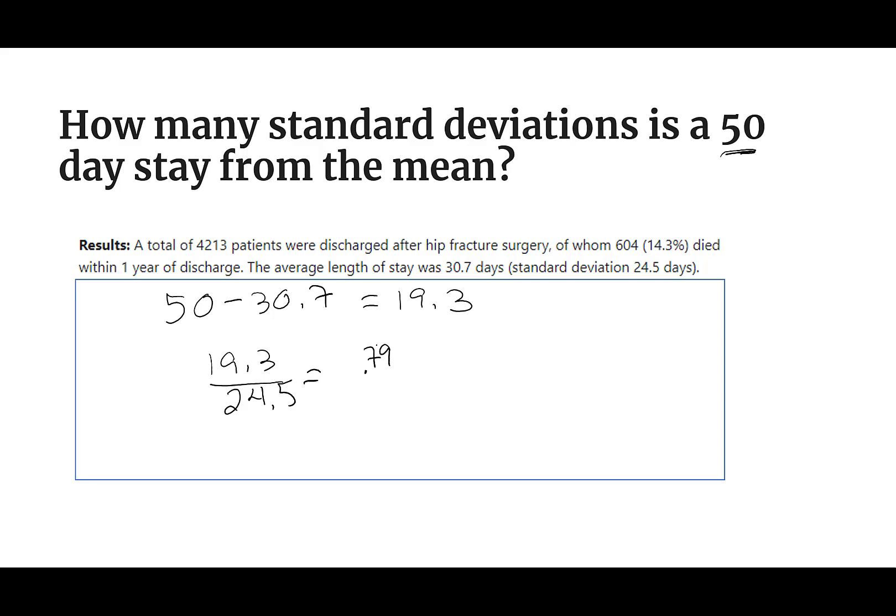And this says this was about, I'm going to round it, 0.79 standard deviations from the mean. And a lot of times that's going to be our comparison. And we say, was it a lot away? Was it a little bit away? And this was within one standard deviation.